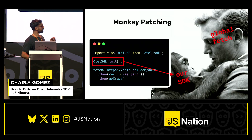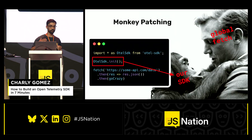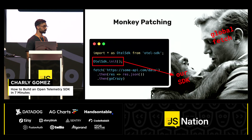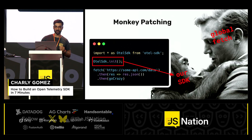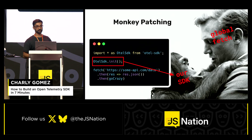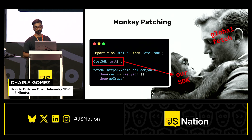Let's look behind the scenes of this init call. How can we, behind the scenes, make fetch emit these telemetry signals? We do this by using a technique called monkey patching, which many of you are probably aware of. It is a technique where we modify a module or a function and extend the functionality without updating the core functionality of it during runtime.